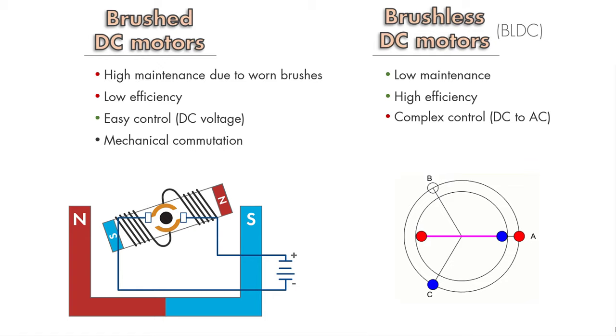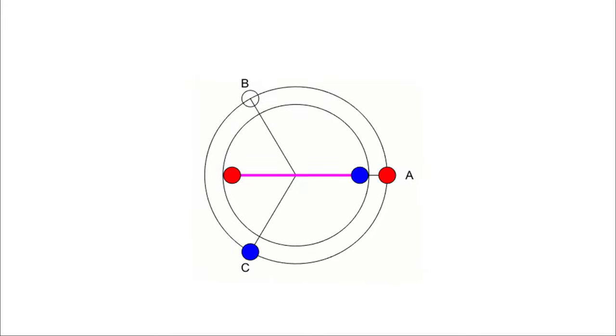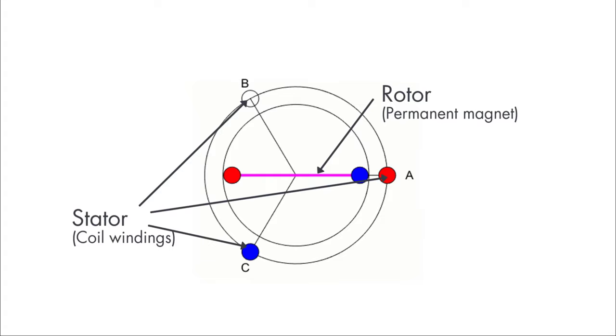BLDCs overcome the shortcomings of brushed motors by replacing mechanical commutation with electronically-driven commutation. To better understand this, let's look at the BLDC motor structure. You can think of a BLDC almost as a flipped version of a brushed motor, because the permanent magnets now become the rotor, whereas the coil windings become the stator.